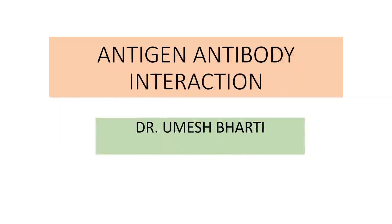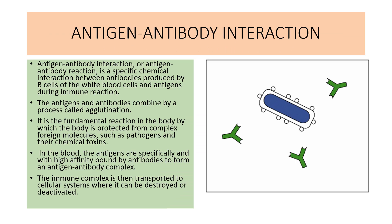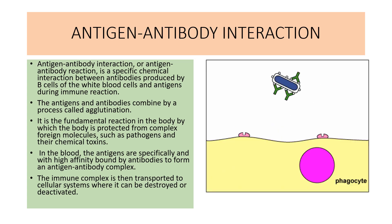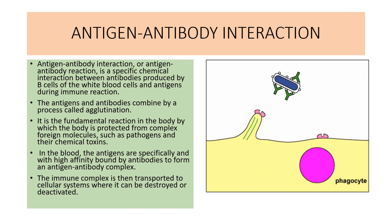Hello, good morning students. Today we will study something regarding antigen-antibody interactions. Antigen-antibody interactions are very important in immune responses. Antigens have specific sites on them which are known as epitopes, whereas antibodies have specific sites known as paratopes. Epitope and paratope bind with each other in a lock-and-key type of arrangement.